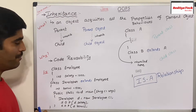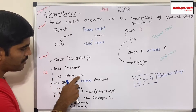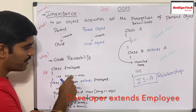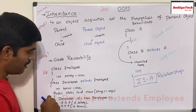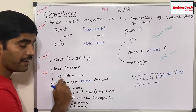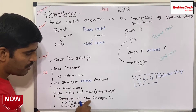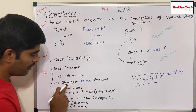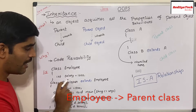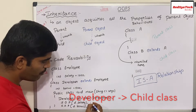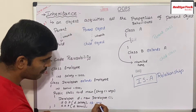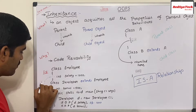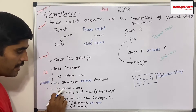Let me go with a typical example. We have a class called Employee where salary is 1000, and I have another class Developer which extends Employee. Whatever properties are defined in the Employee class will by default be available in the Developer class. Let's say I have another variable defined as int bonus equal to 500. In the main method, I'm creating an object of the Developer class and calling D.salary. The salary is not defined within the Developer class, but it is inherited from the Employee class, so the output is 1000.